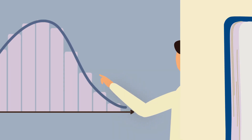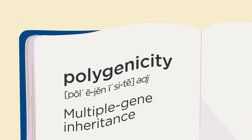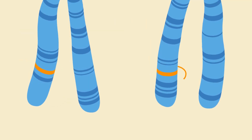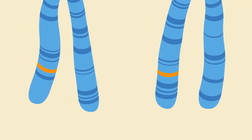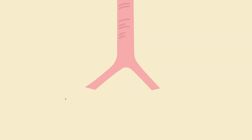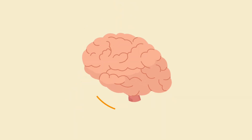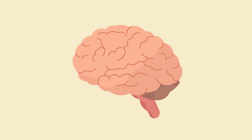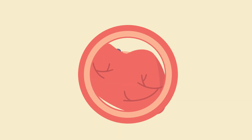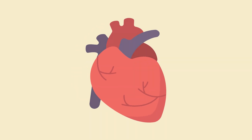First, we need to understand polygenicity. With a monogenic condition, like cystic fibrosis, we know that the presence of a single allele inherited from each parent will lead to inheritance of the disease. But with complex diseases, like Parkinson's disease or coronary artery disease, it's much more complicated.